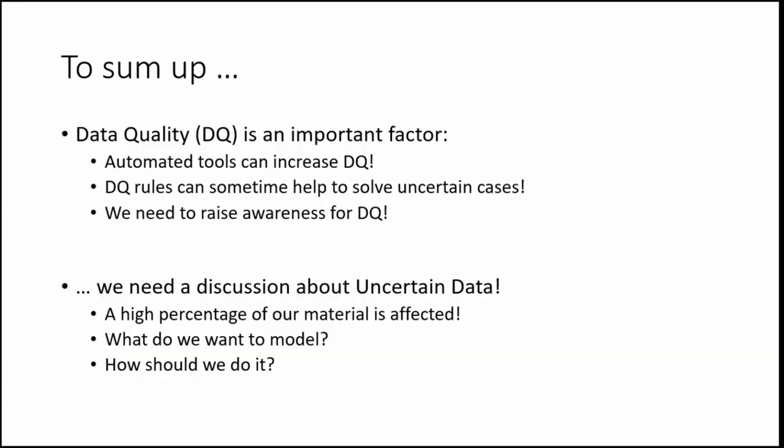To sum up very briefly: data quality is important — it's particularly important in linked open data, where one mistake can explode exponentially across the web. For a while, the British Museum had the mint of Heraclea on the Propontis mapped to a town of the same name in southern Italy, and this was then being plastered across the web by people using that URI. But automated tools can help improve data quality.